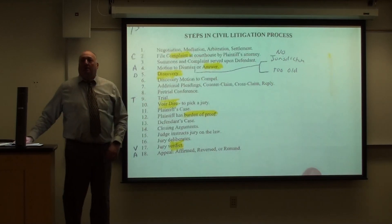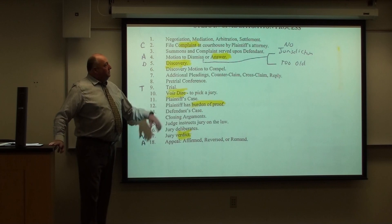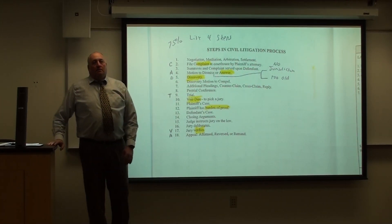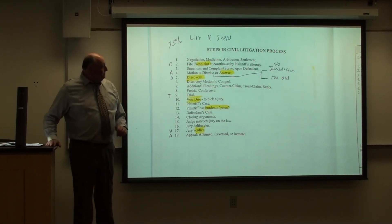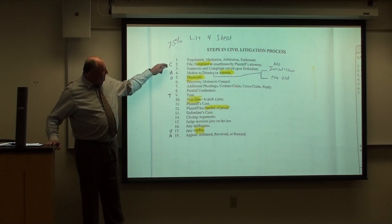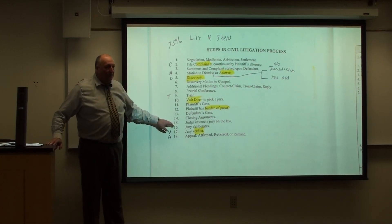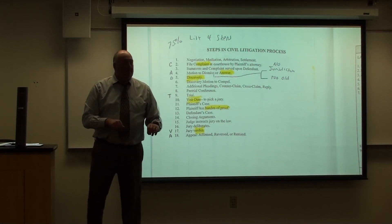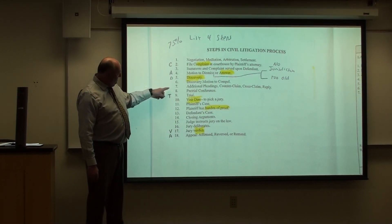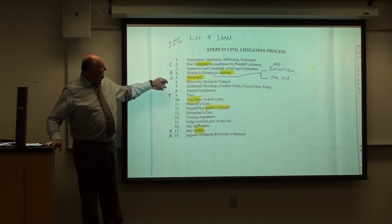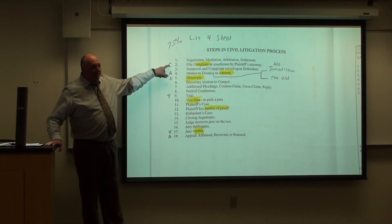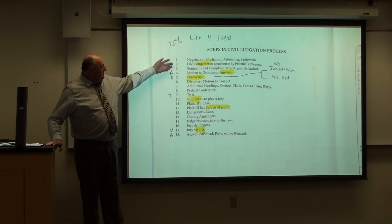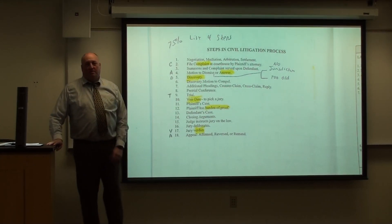What do you need to know? Possible fill-in-the-blank: list four steps in a civil lawsuit — just pick any from page 27. The mnemonic is CADTVA: Complaint, Answer, Discovery, Trial, Verdict, Appeal — those are the big ones in order. Complaint is always first since you can't have a lawsuit without it; appeal is always last. I'll also mix them up and ask you to put them in correct order. The midterm is February 13th — next week is review, where I'll go through all likely fill-in-the-blank pages.